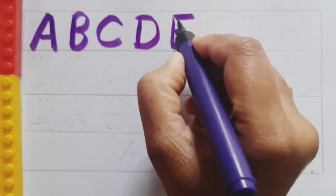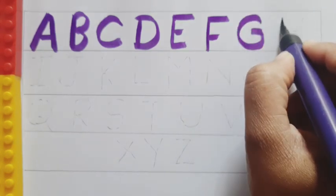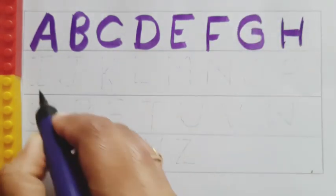E. E for elephant. F. F for flag. G. G for goat. H. H for hand.